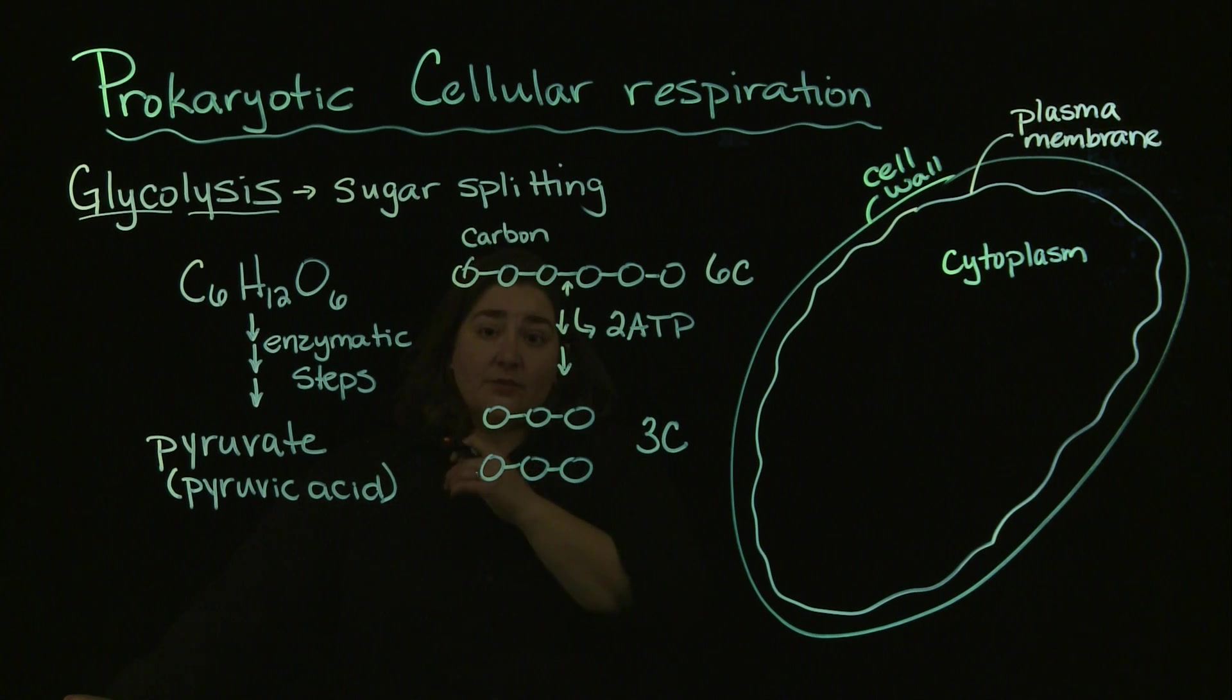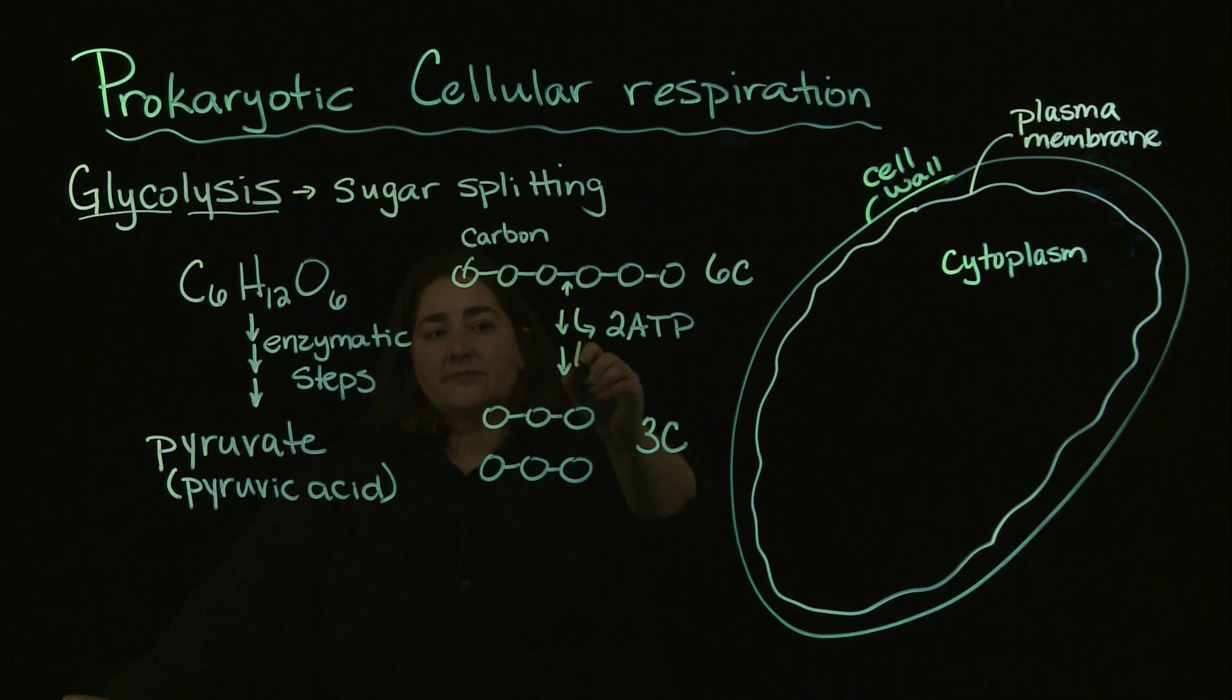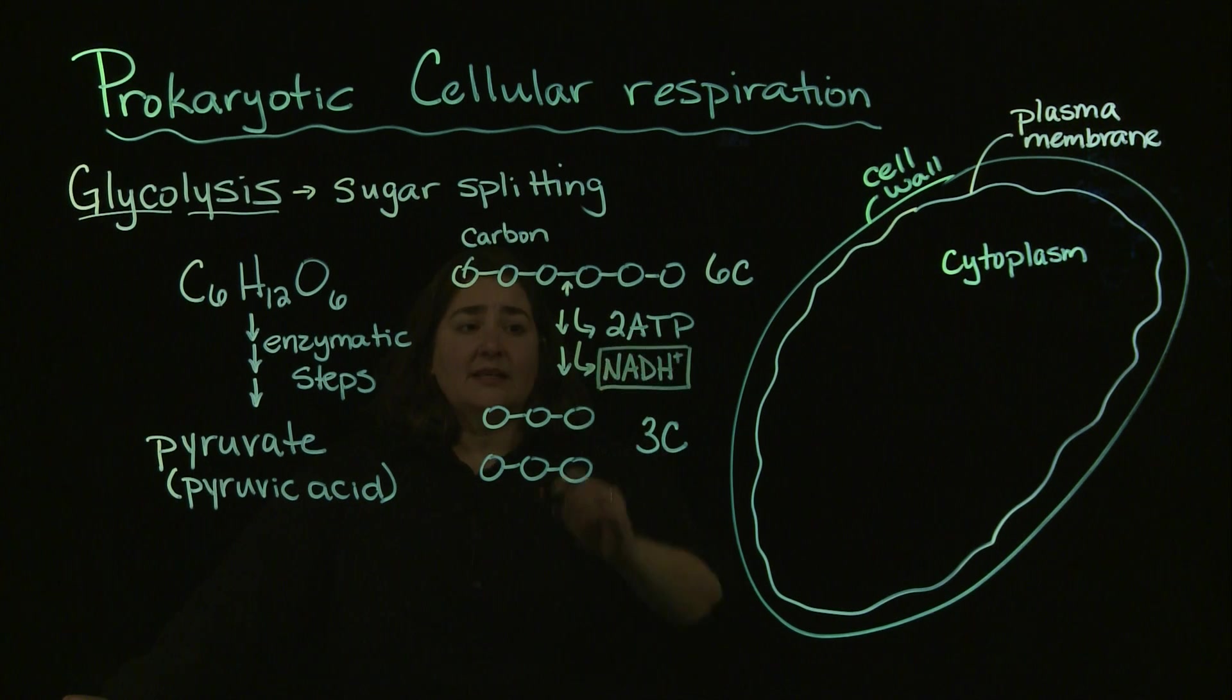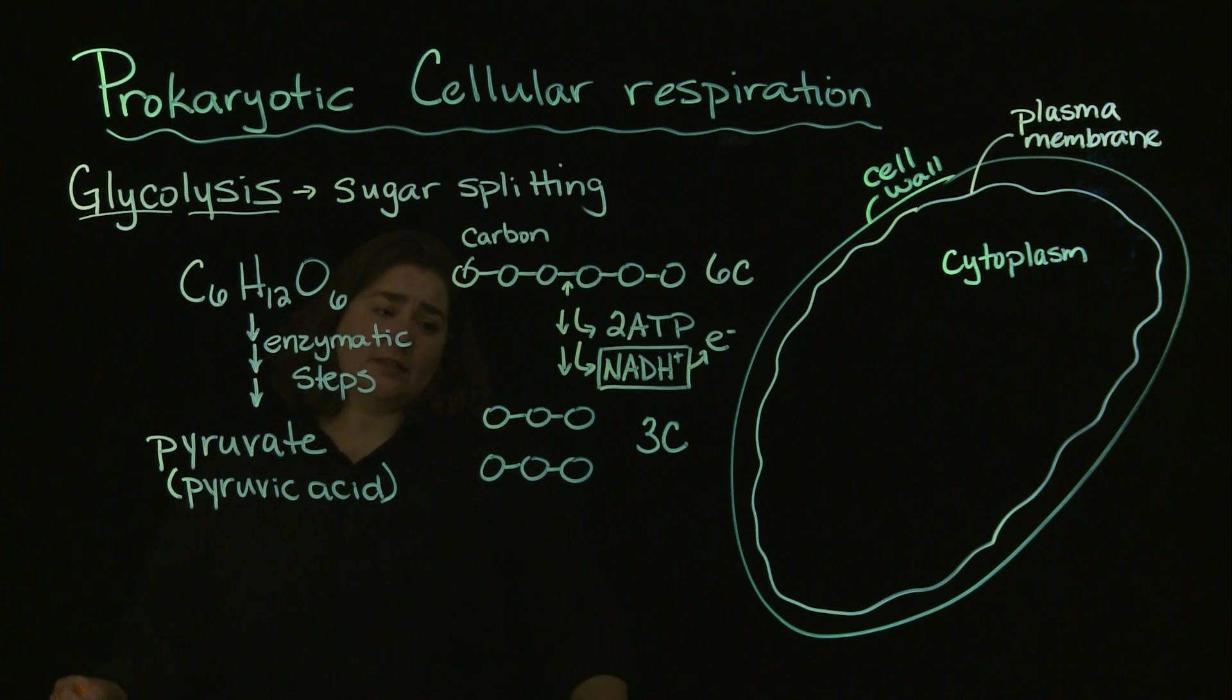We are also going to, in terms of glycolysis, generate some other products. That other product is going to be NADH. That NADH is going to become important to the electron transport chain. Because essentially what that NADH is, those are going to be the electrons that are going to start fueling our electron transport chain. So we generate a little bit of NADH out of this, and a little bit of ATP.